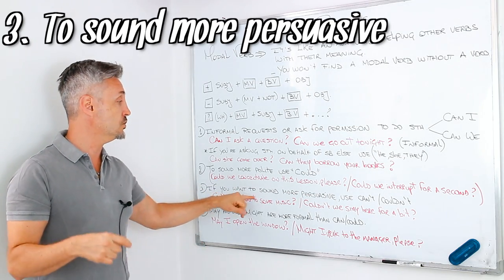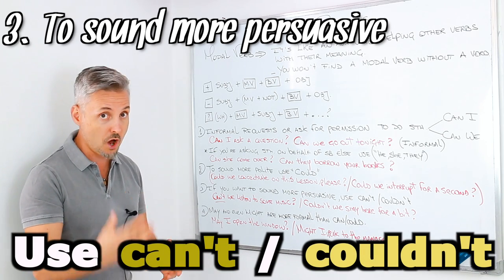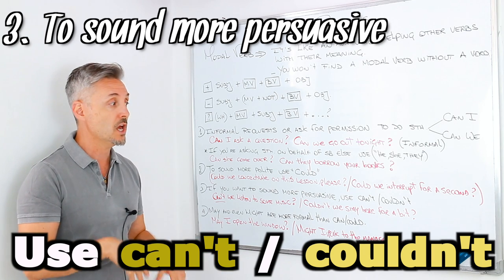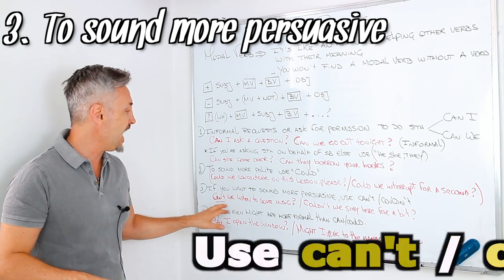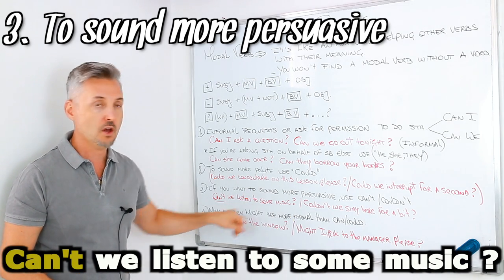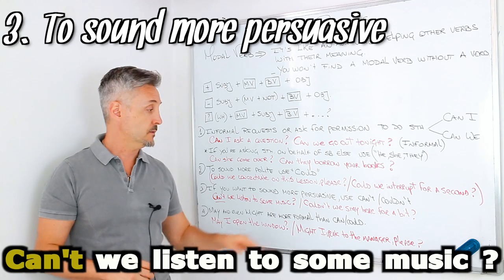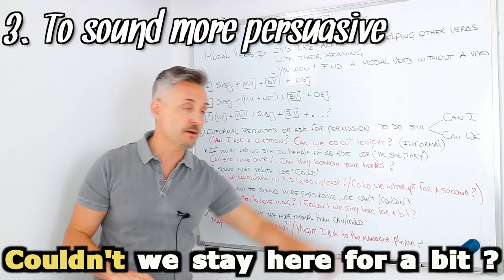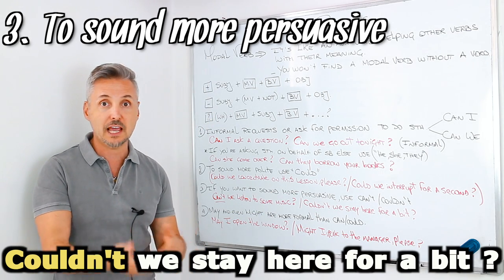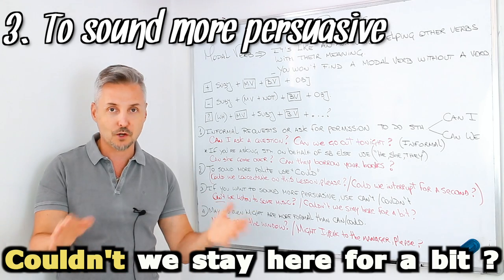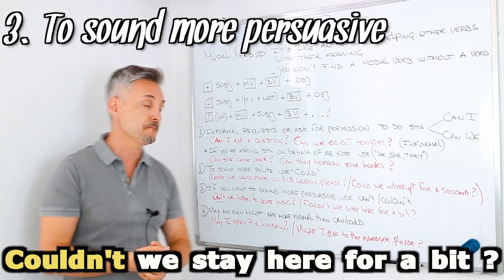Now, the third point, if you want to sound more persuasive, you can use can't, or cannot in American English, can't in British English, or couldn't. Can't we listen to some music? Or with couldn't. Couldn't we stay here for a bit? For example, at a library, you want to stay longer and people need to close it for the day, and you ask, Couldn't we stay here for a bit?